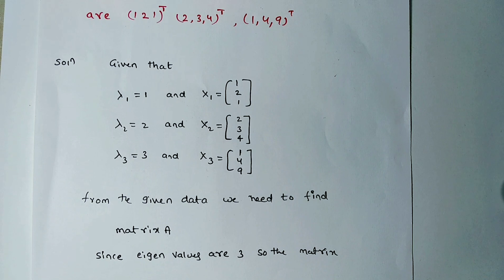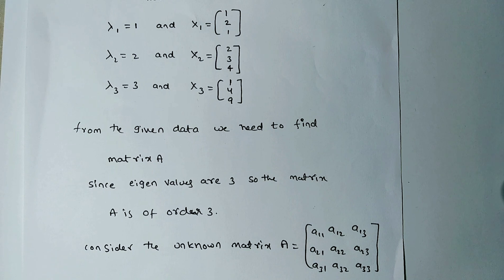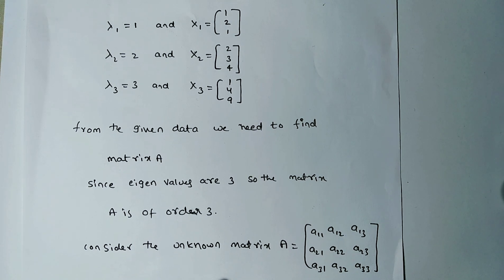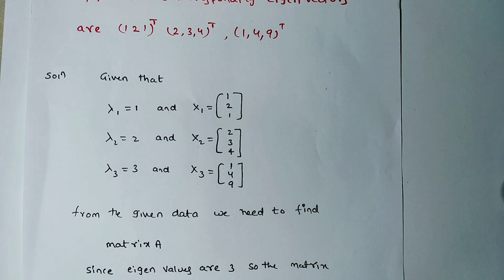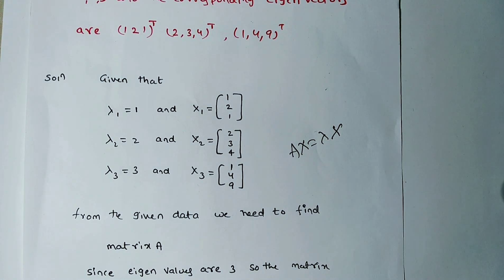To find the matrix, we use the eigenvalue-eigenvector definition: λ is said to be an eigenvalue of A if it satisfies Ax = λx. This is one method and is a lengthy approach. There is also a shortcut method available.